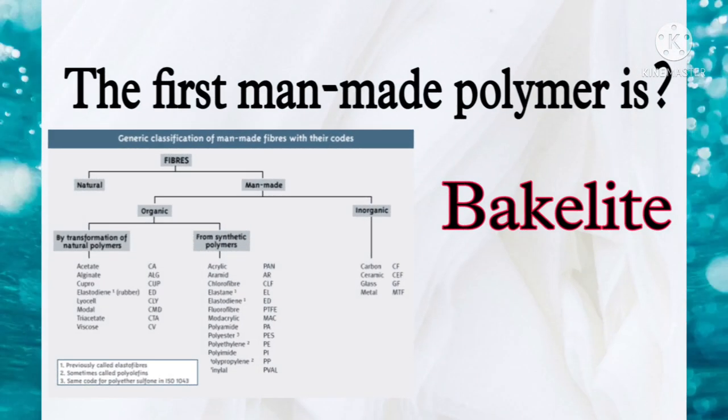The next question: what is the first man-made polymer? There are two types of polymers — synthetic and natural. Synthetic polymers are derived from petroleum oil and made by engineers. Examples include nylon, polyester, teflon, and epoxy. The correct answer is Bakelite.